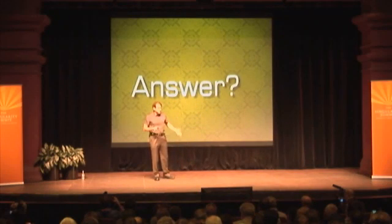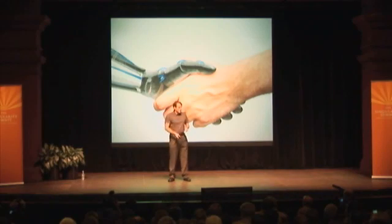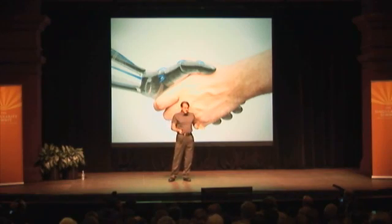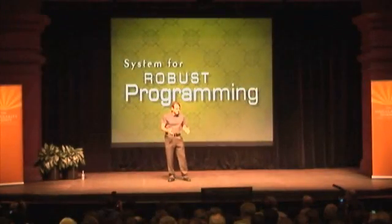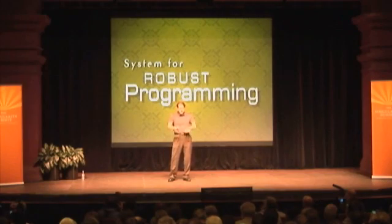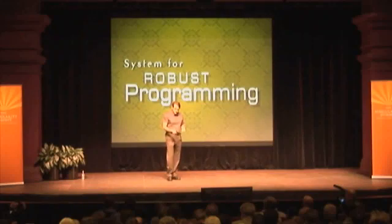So what's the answer? If we can't do it automatically and we can't do it by hand, the answer is a collaboration of man and machine — where we build a system for robust programming that allows people to enter all the things that people can do, such as the vast amount of information from introspection, and lets the machine do everything that people can't do — solving hard problems to build the detailed code.